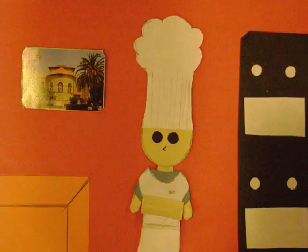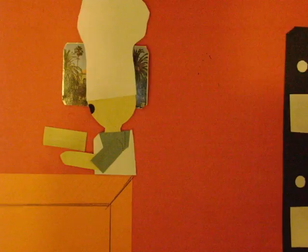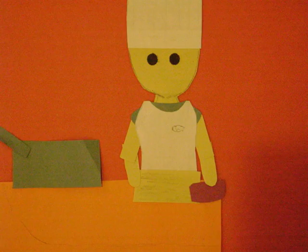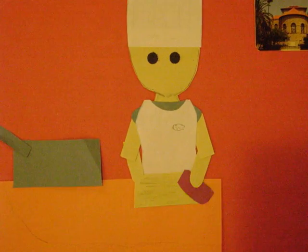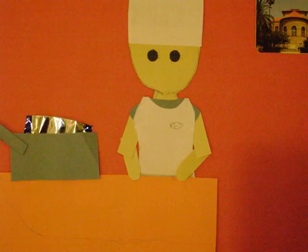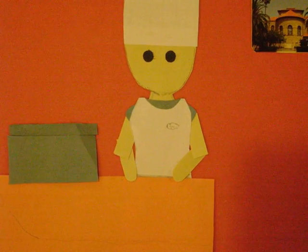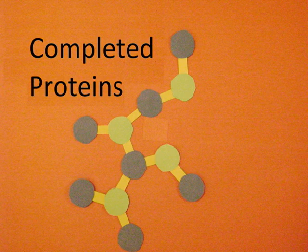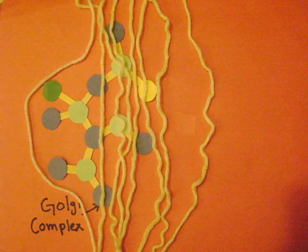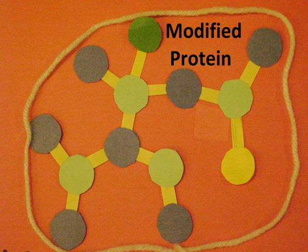Once the cake is done baking, our baker now decorates it and packages it for delivery. In a cell, the Golgi complex decorates or modifies proteins and then packages the completed proteins in a vesicle.